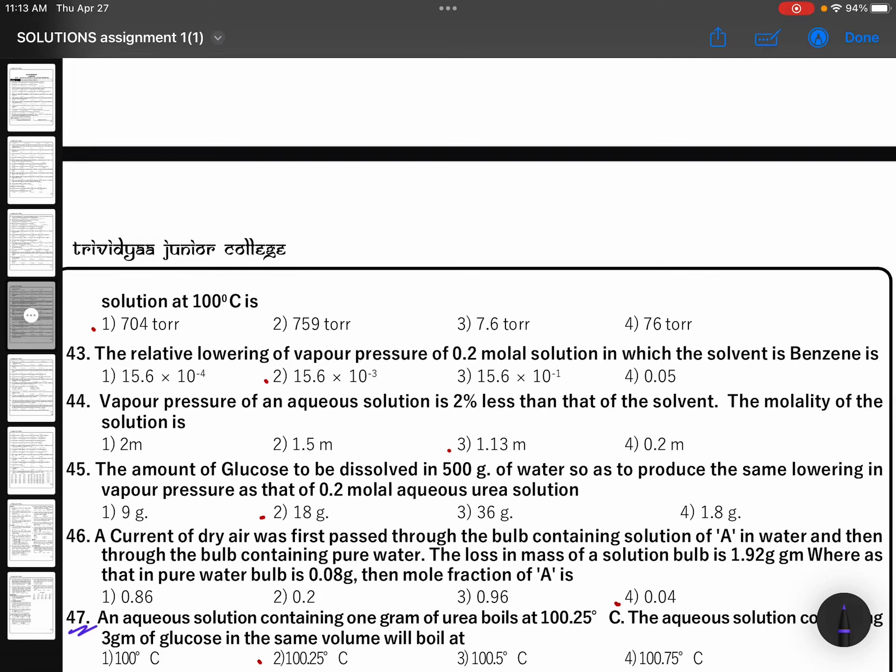An aqueous solution containing 1 gram of urea boils at 100.25. The aqueous solution containing 3 grams of glucose in the same volume will boil at the same temperature.